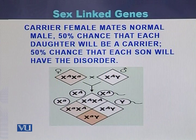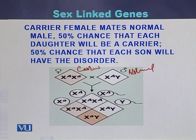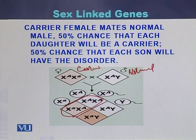In the second example of sex linked genes, a carrier female mates with a normal male. As a result of this cross, there will be a 50 percent chance that each daughter will be a carrier. There will be two daughters produced — daughter one and daughter two — with a 50 percent chance that each daughter will be a carrier of the disease, and a 50 percent chance that each son will carry the disease.